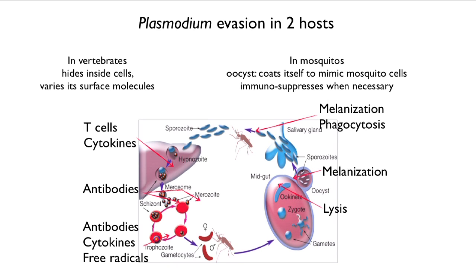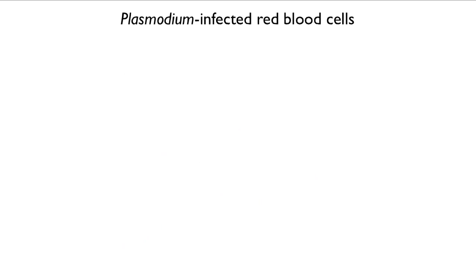In the liver of the human, the parasite is interacting with T cells and cytokines. In the bloodstream, there are antibodies, cytokines, and free radicals — and it is hiding from them inside the blood cell. In the mosquito host, it is subject to melanization and phagocytosis. There is a very active anti-pathogen response in insects, which can happen in the salivary gland, the gut wall, and the gut itself, where it is exposed to lysis by gut enzymes. Living life as a malaria pathogen means being exposed to a regular sequence of very threatening events, and they have evolved adaptations to avoid all of them.